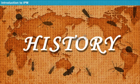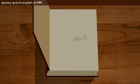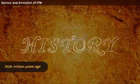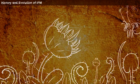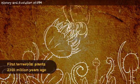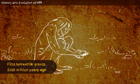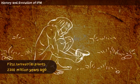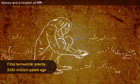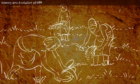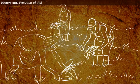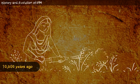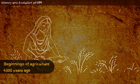Before learning about IPM for crops in detail, let us learn about its ancient history. Terrestrial plants appeared nearly 2,400 million years ago, which was followed by the appearance of insects and homo sapiens nearly 2,300 million years and 2,200 million years ago, respectively. Beginnings of agriculture were seen nearly 10,000 years ago, and the first records of insecticides were seen 4,500 years ago.